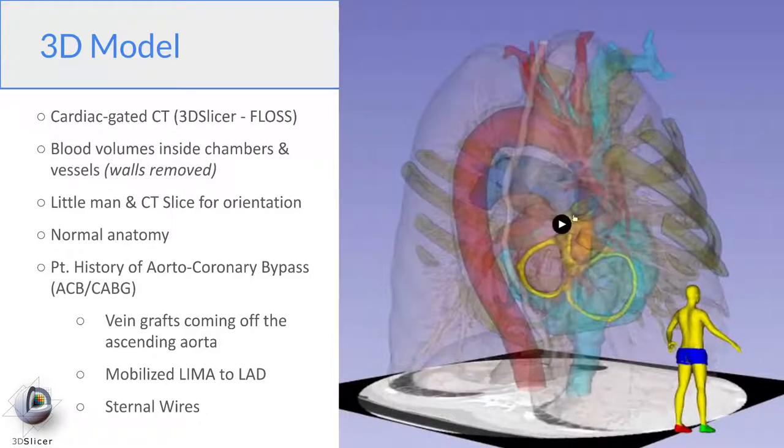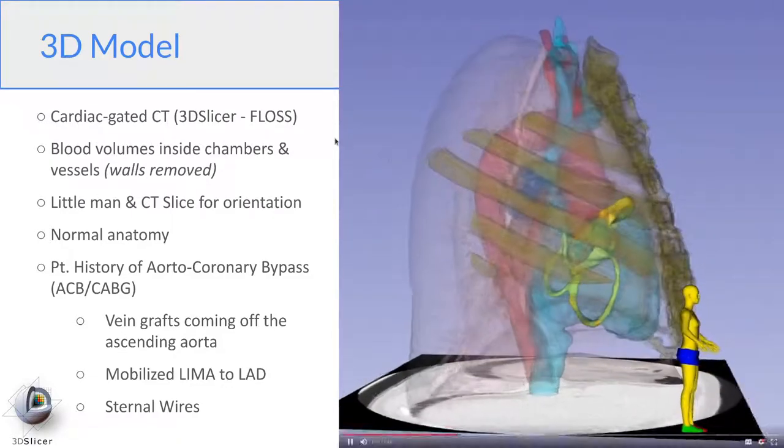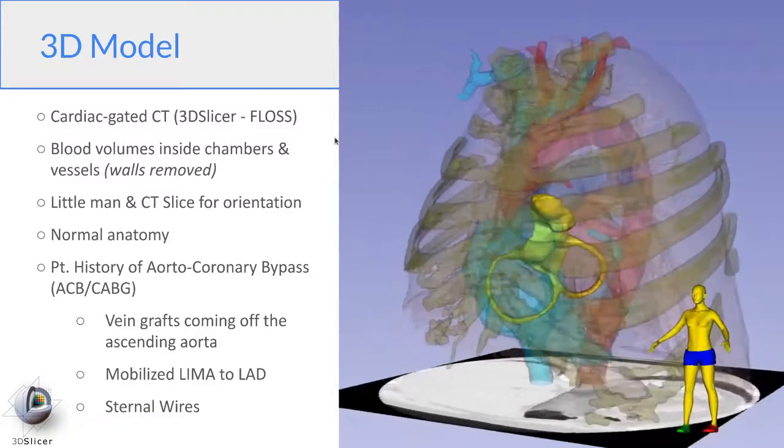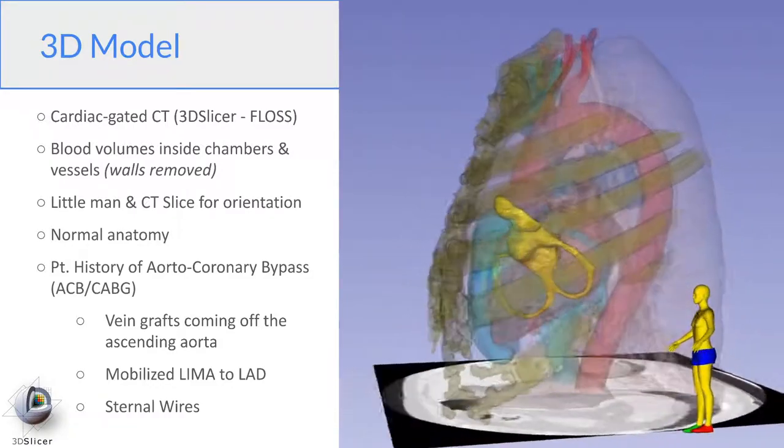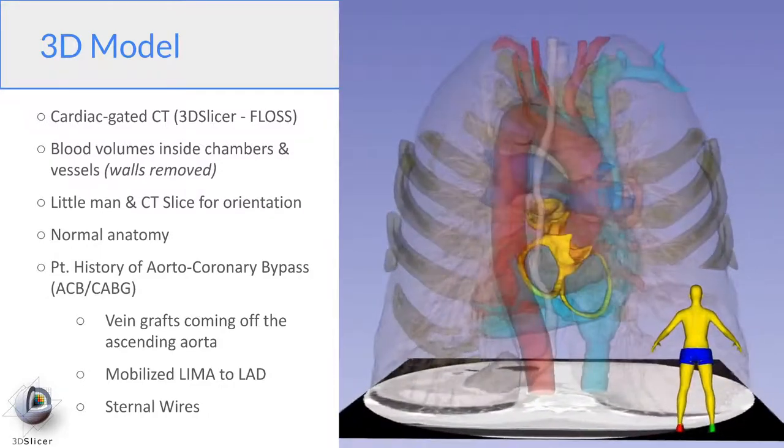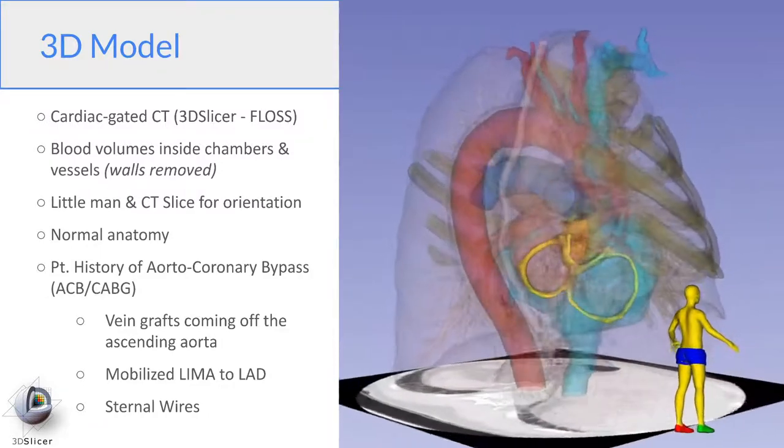What we're showing here are blood volumes of the chambers. So the walls of the vessels and all the myocardium has been removed so that you can more clearly see all the connections inside the heart. The small man on the right will show you the orientation of any of the images.